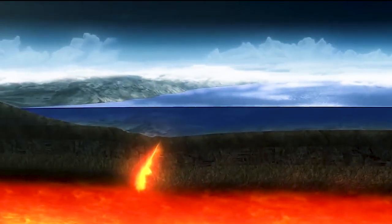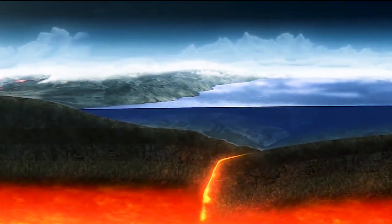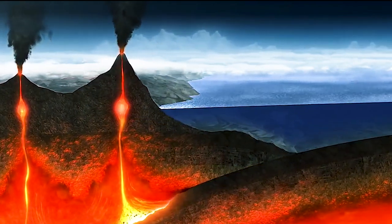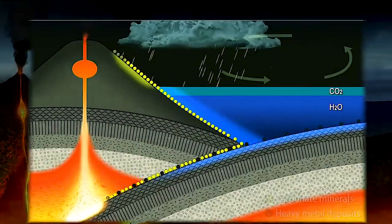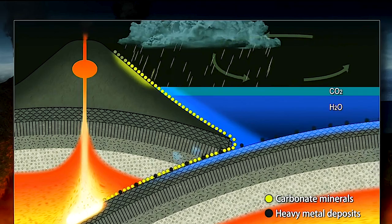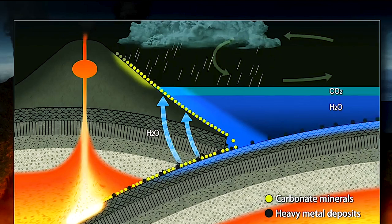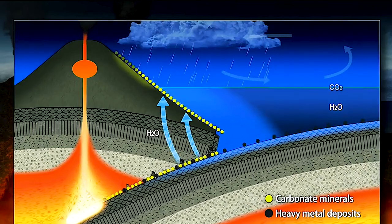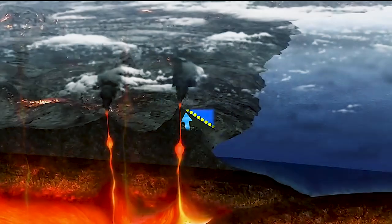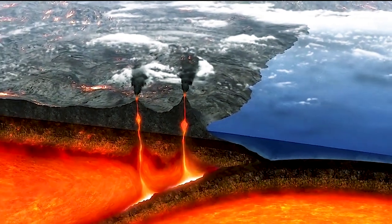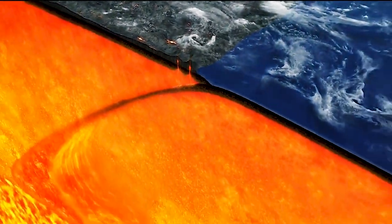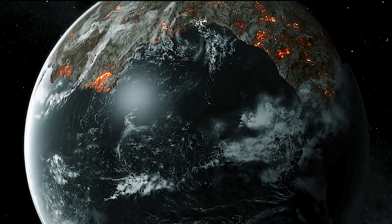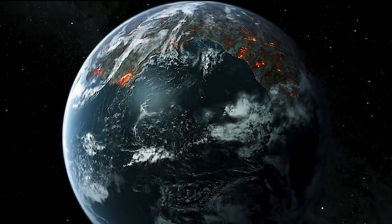The oceanic plate subducted under the lighter continental plate. Weathered sediments neutralized the ultra-acidic ocean. Heavy metals settled out and became fixed as deposits at the mid-oceanic ridge. These deposits were transported through plate tectonics into the deep mantle. Gradually, the ocean became a habitable environment.